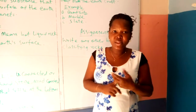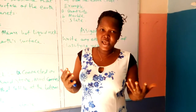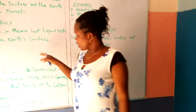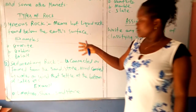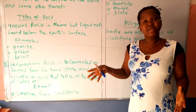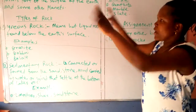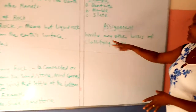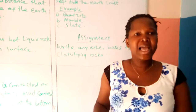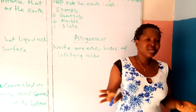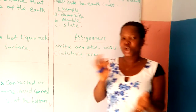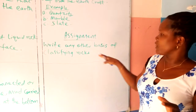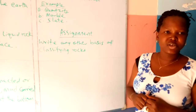Texture is also a criteria for classifying rock. Even color as well — color is also a criteria for classifying rock. So this is where we center these notes. Your assignment: write any other basis of classifying rock. I've mentioned three — edge, texture, and color — and I want you to find one or two additional ones. Thank you so much. Bye.